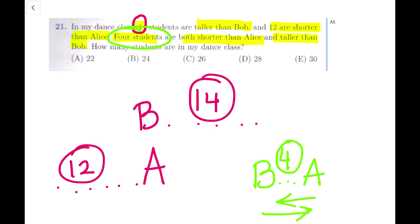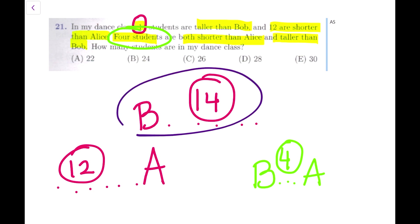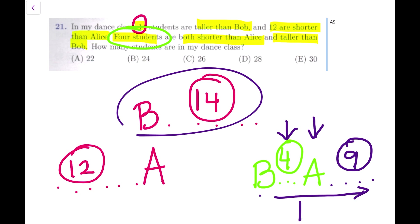From the beginning, there are 14 students who are behind Bob. There are 14 students behind Bob, and in our current situation there is Bob, then 4 students, then Alice. So there are 5 students already, which means there should be 9 students more behind Alice to make it 14 students after Bob.